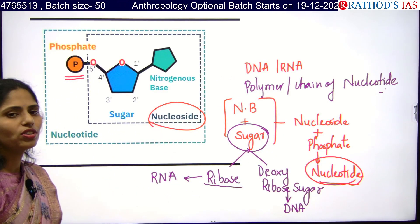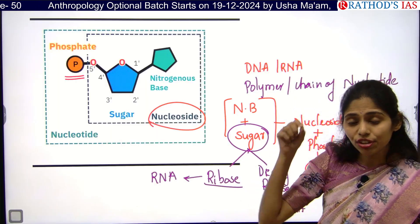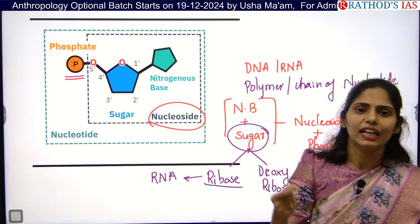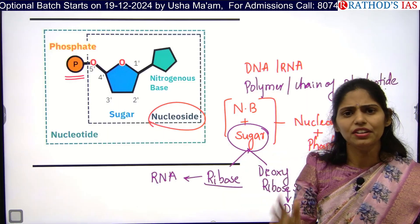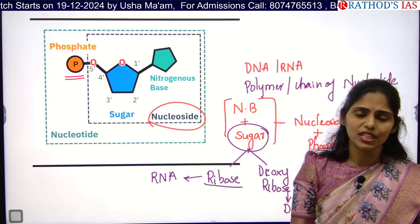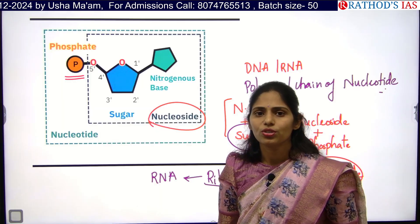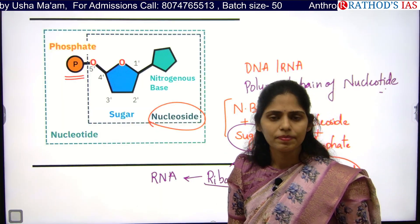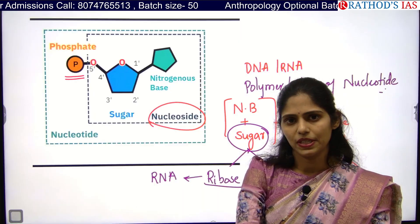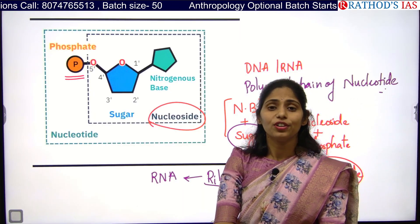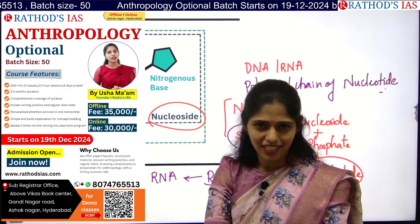This is about the difference between nitrogen base, nucleoside, and nucleotide. If you read from that basic level and can easily memorize them, then this biology in anthropology will be very interesting and useful for you. Don't have a fear of biology, especially if you are from a maths background. Try to join this course starting 19th December — fees are 35,000 offline and 30,000 rupees online. Thank you for watching; please like, share, and subscribe to Rathawad Science Academy.